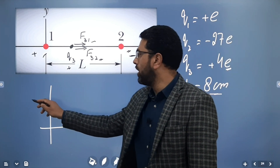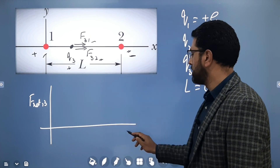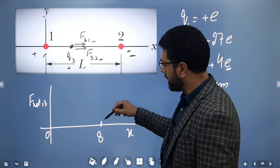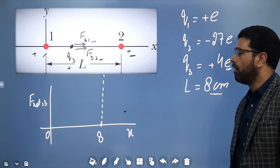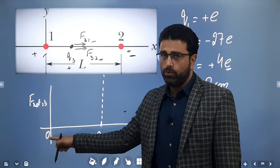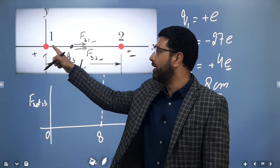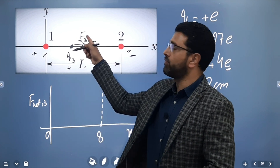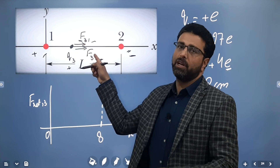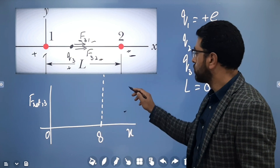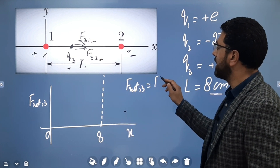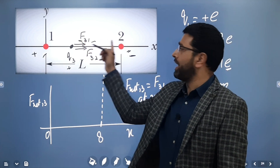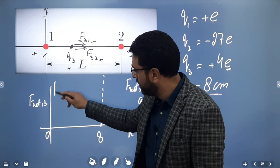I want to draw net force on particle 3 versus X. This is zero and somewhere at 8 centimeters, which is L. When X tends to zero — meaning Q3 is extremely close to particle 1 — F31 will tend to infinity because distance is almost zero, and F32 becomes negligible. So net force on 3 is just F31, which is in the positive direction. So the curve will come from infinity and decrease as we move Q3 away from particle 1.